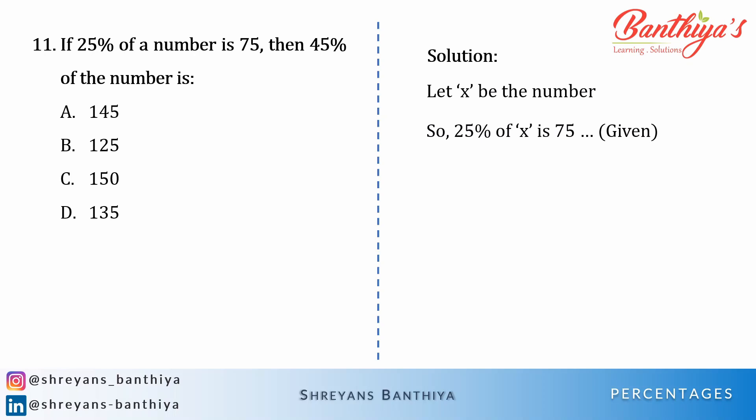25% of that number is 75, so 0.25x equals 75, which means x becomes 300. Now generally, please don't solve at this step — you can keep x as 75 divided by 0.25, because calculating and getting to the right answer will take some time. Calculations should be kept for the last moment so that you save time.